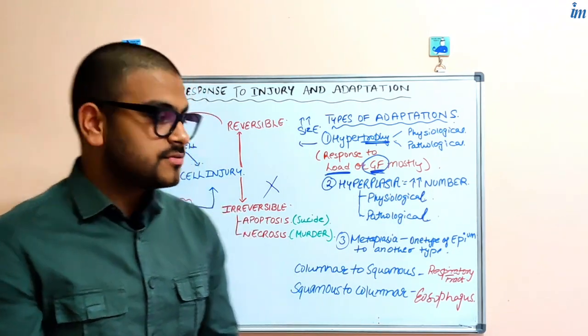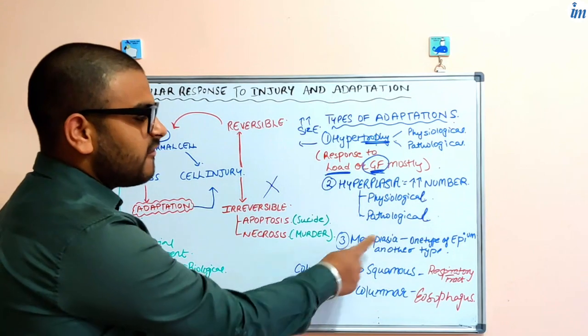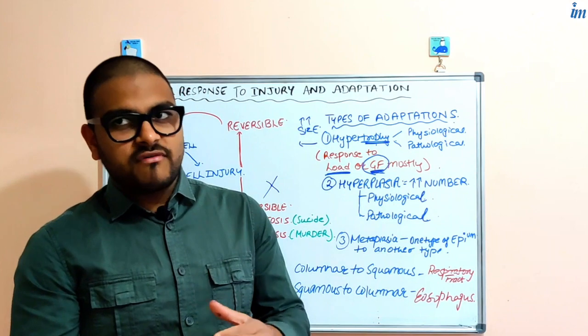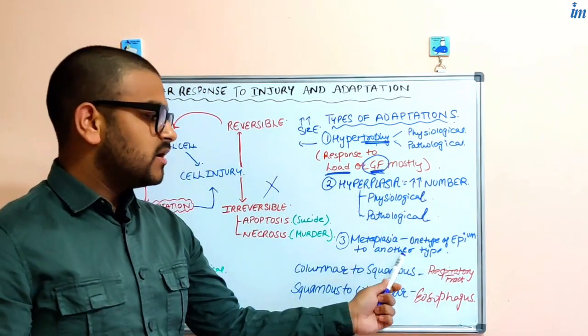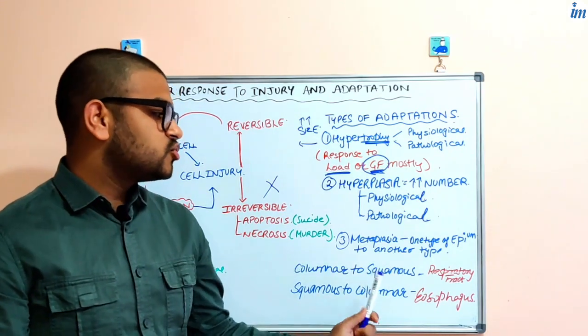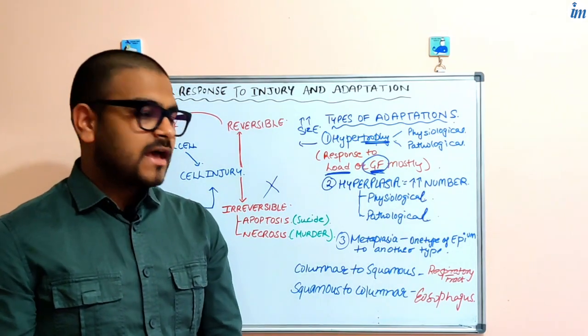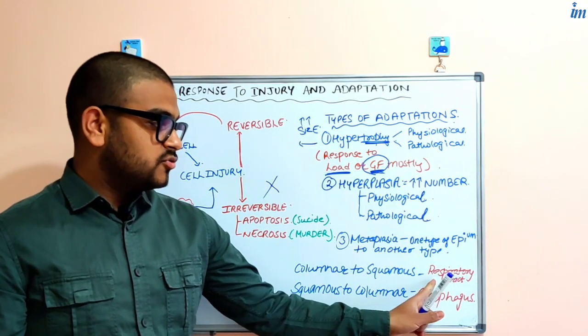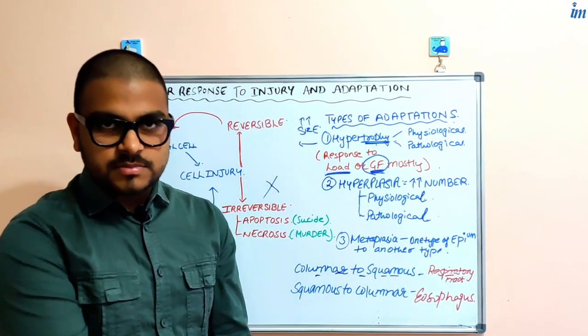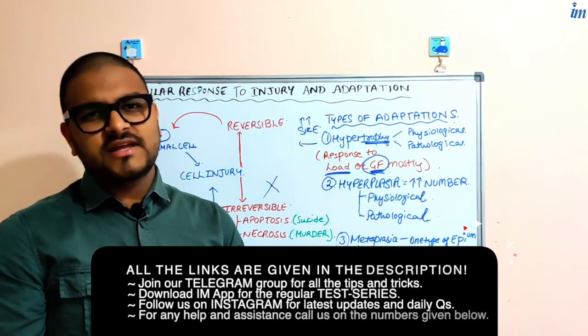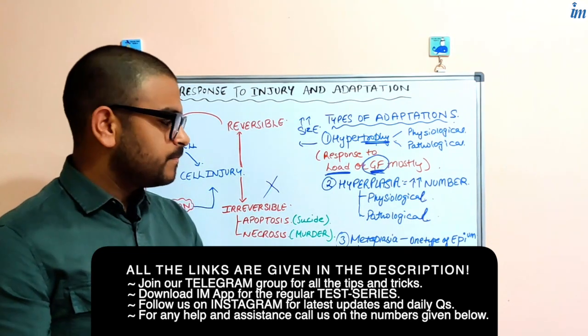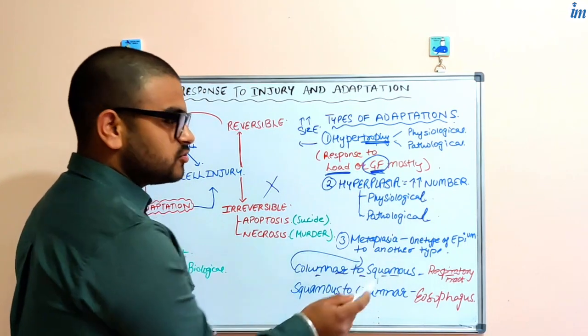Then we have metaplasia. Metaplasia means there is change of one type of epithelium to another type of epithelium. Examples: first, columnar to squamous metaplasia. You should first of all remember where such type of metaplasia is occurring: columnar to squamous in respiratory tract. In what circumstances? Chronic irritation of respiratory tract by cigarette smoking. So columnar epithelium changes to the squamous one.